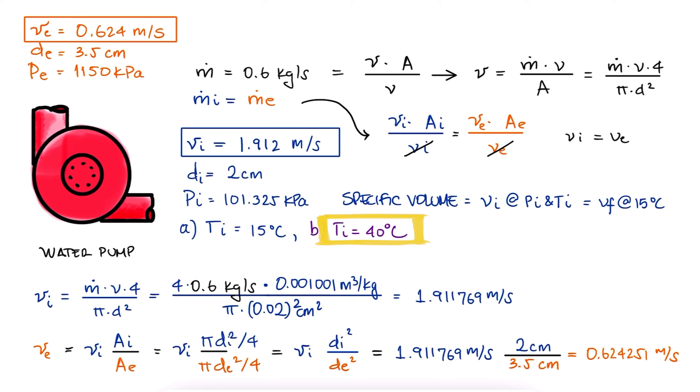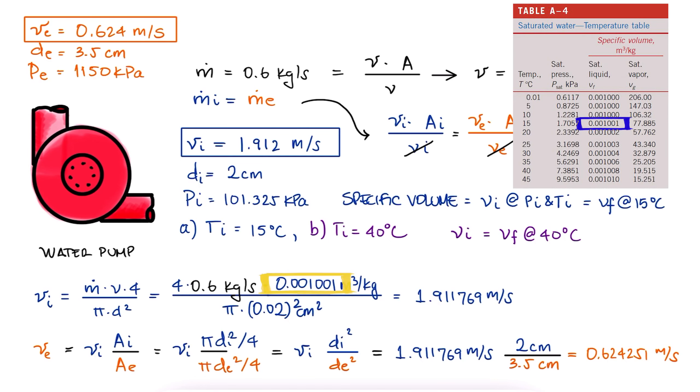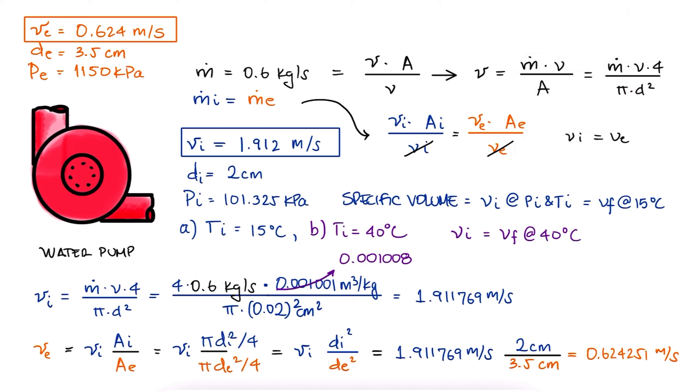Now if the temperature were 40 degrees Celsius, the only value that changes is the specific volume for water. It goes from 0.001001 to 0.001008. The values for VI and VE would change to 1.925 and 0.628 meters per second. Depending on the application, the changes can be assumed to be negligible.